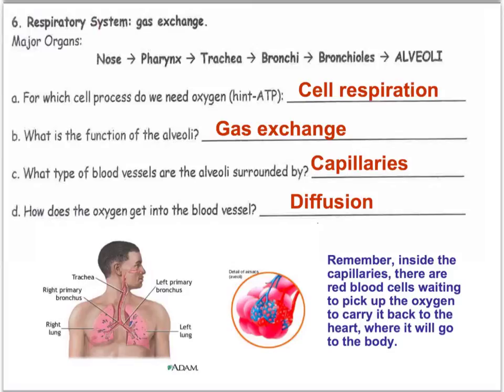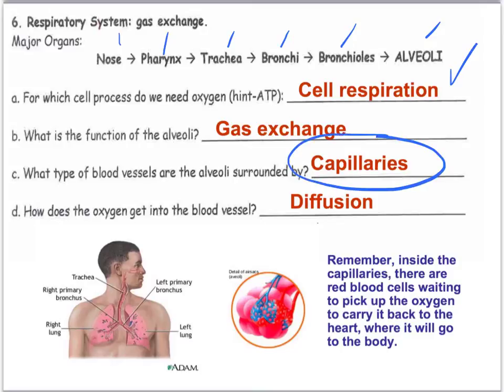We need to go through cellular respiration in order to get ATP, which is energy — this is very important. Major organs you can look at on this slide. The function of the alveoli is gas exchange. Capillaries surround the alveoli, and oxygen gets into the blood vessels by diffusion.